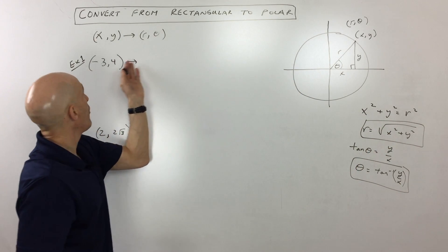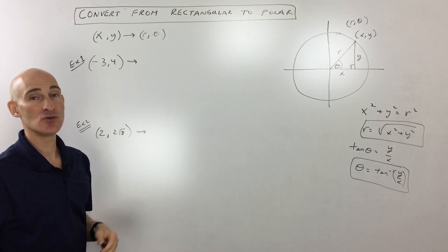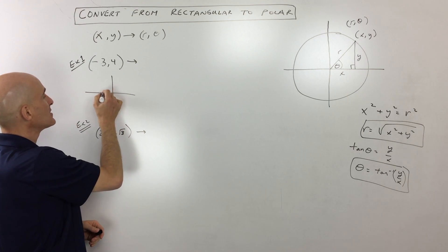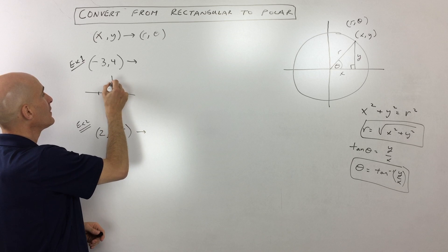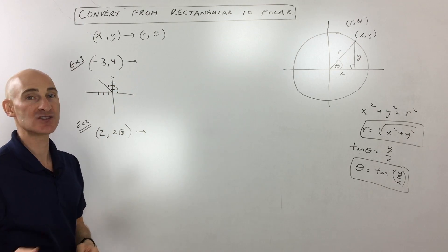Let's look at example number one. They give us the point negative 3, 4. That's x, y, rectangular coordinates. We want to get to r theta. So I always like to draw a sketch. I just kind of like to see what's going on here. So left 3, up 4, that's the point. That's the radius we're looking for. That's the angle we're looking for. You with me so far?